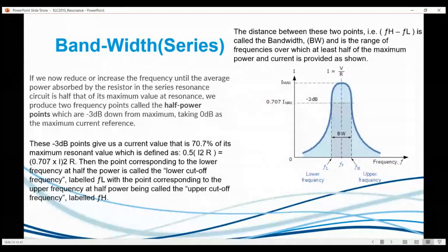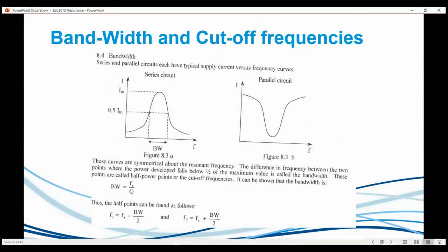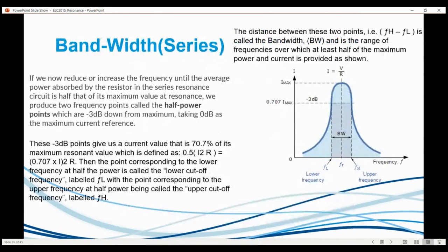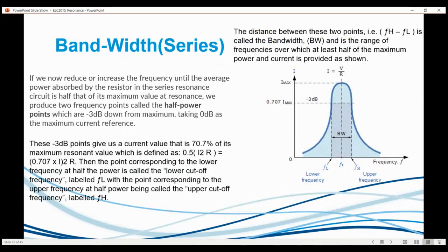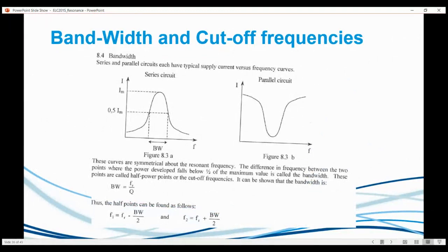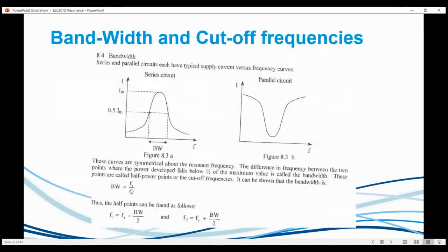3 decibel points give us a current value of 70.7 times maximum resonant value. And you have two corresponding points, which is the lower frequency, which is called the lower cutoff and the upper cutoff, right? Basically, I think that's the working area of a resonant circuit. You obviously can't, I think if you stay at maximum, the circuit can obviously burn out and things like that. So I think it's the working region of a resonant circuit. What is there? It's the distance between the two points, and that is called the bandwidth. The same bandwidth is a range of frequencies over which at least half of the maximum power and current is provided. So it's basically the distance between the two working frequencies. Because I don't think we can actually work at maximum. Obviously, we get super high voltages and that is not desirable.